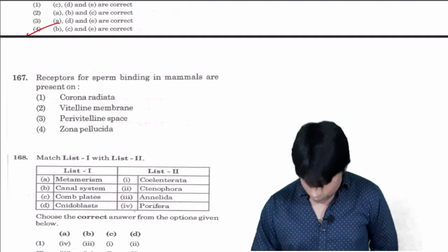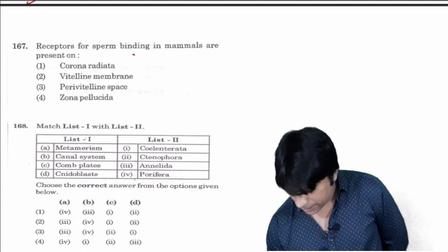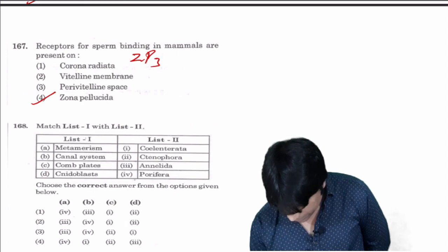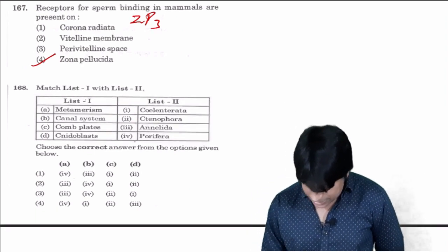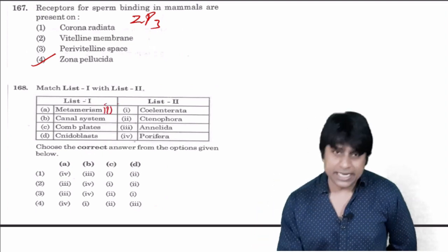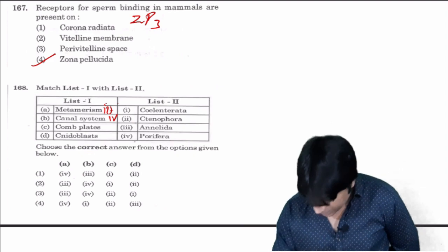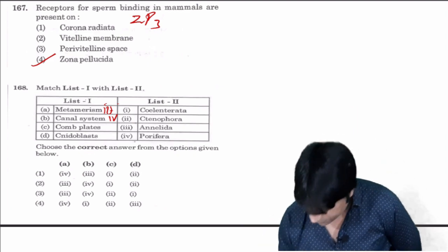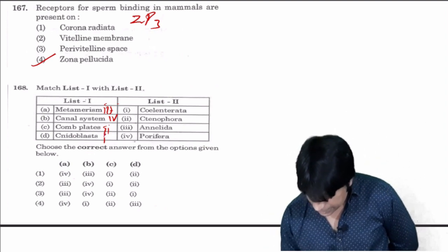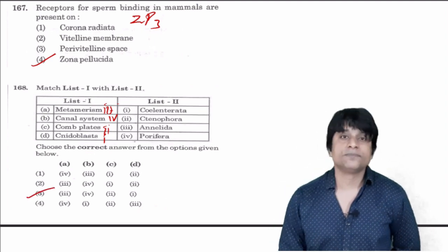Water vascular system is a characteristic feature of echinoderms, correct. So A and D are wrong, remaining all statements are correct. B, C, E are correct statements, so your answer is four. Receptors for sperm binding in mammals are present in zona pellucida. They are ZP3 receptors present in zona pellucida, the answer is four.